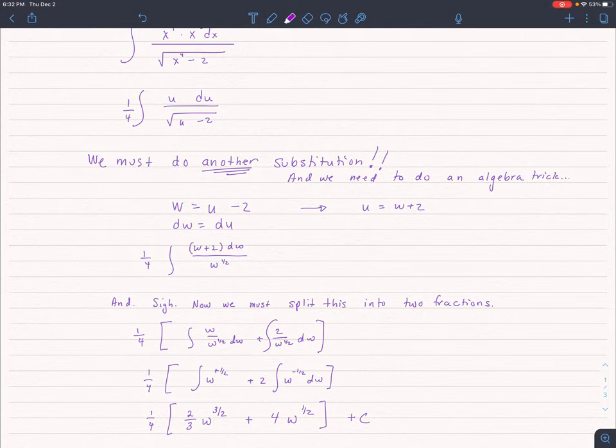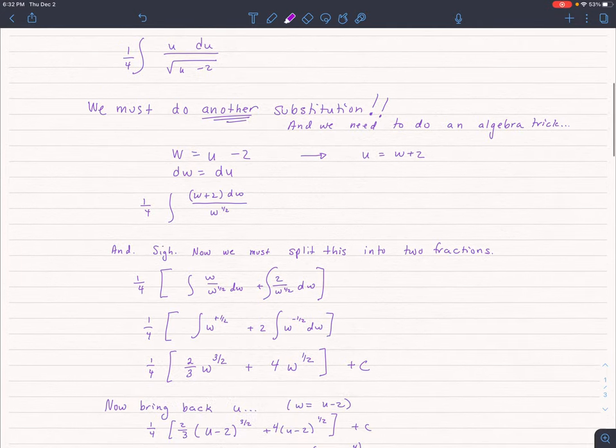And finally, I come up with 1/4th times the quantity, 2/3rds, w to the 3 1/2 power plus 4, w to the 1 1/2 power all plus c. Of course, I can't leave things in terms of w, can I? So we need to first bring it back into u land. So here I am in u land. I've gone ahead and re-substituted. I said that w was equal to u minus 2.